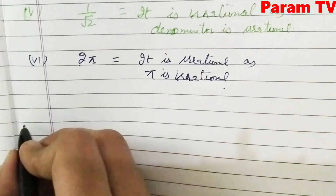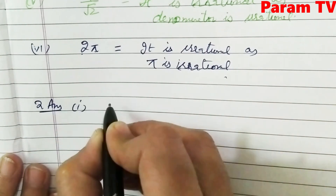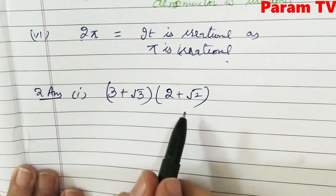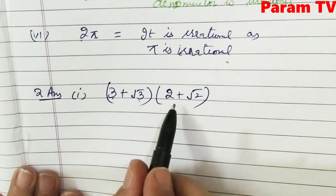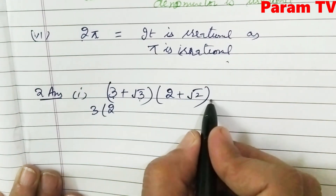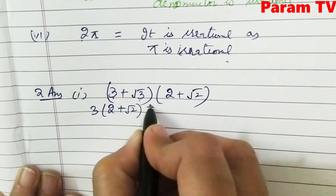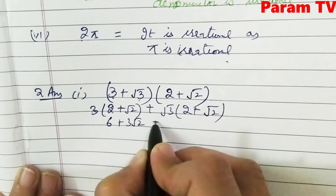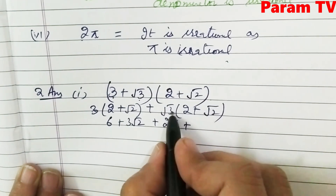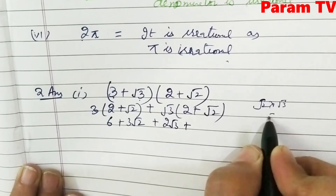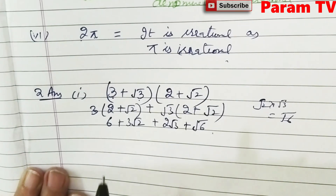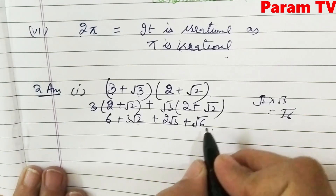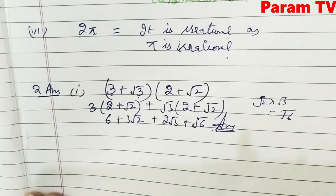Let's do Question 2, first part: (3 + √3)(2 + √2). No standard formula applies here since the terms are all different. Multiply 3 by (2 + √2), then √3 by (2 + √2). This gives 6 + 3√2 + 2√3 + √6. All terms are unlike, so this is the final answer.